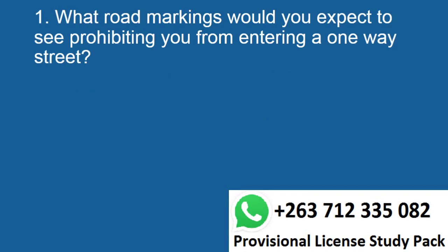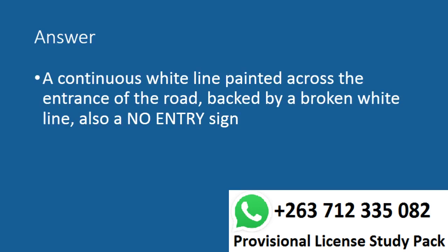Question 1. What road markings would you expect to see prohibiting you from entering a one-way street? Answer. A continuous white line painted across the entrance of the road, backed by a broken white line, also a NO entry sign.